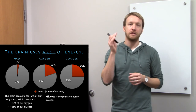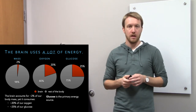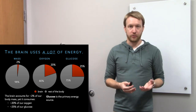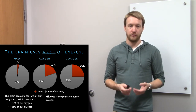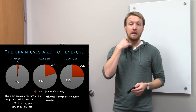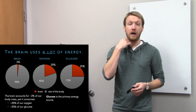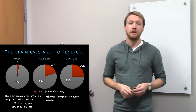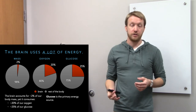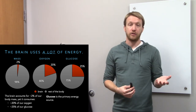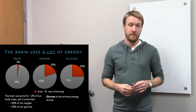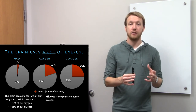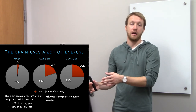Glucose is going to be the primary energy source for the brain. The reason we believe this is because of the respiratory quotient. If you measure arterial oxygen and then venous carbon dioxide, you can look at the rate of oxygen utilization and carbon dioxide production — you'll see they're about the same. That suggests we're taking in glucose and breaking it down to carbon dioxide.